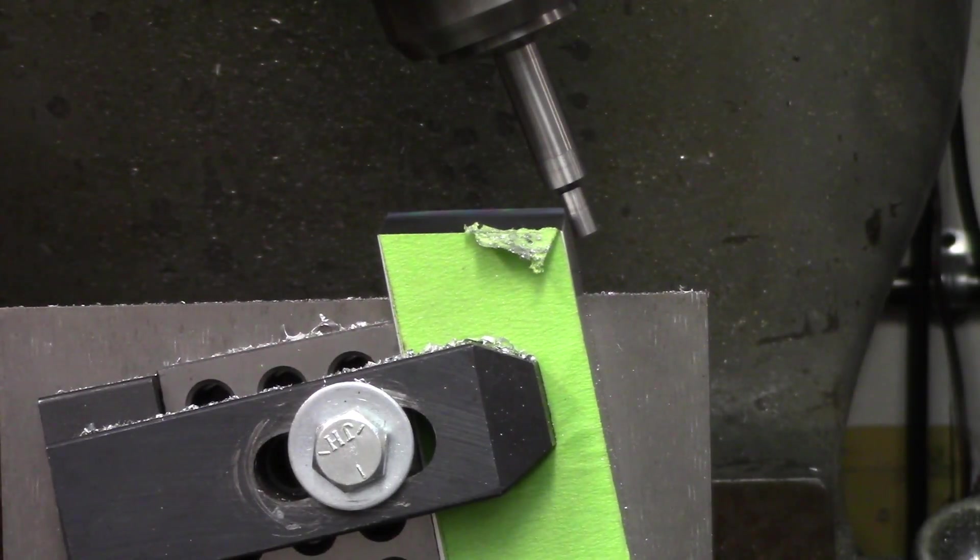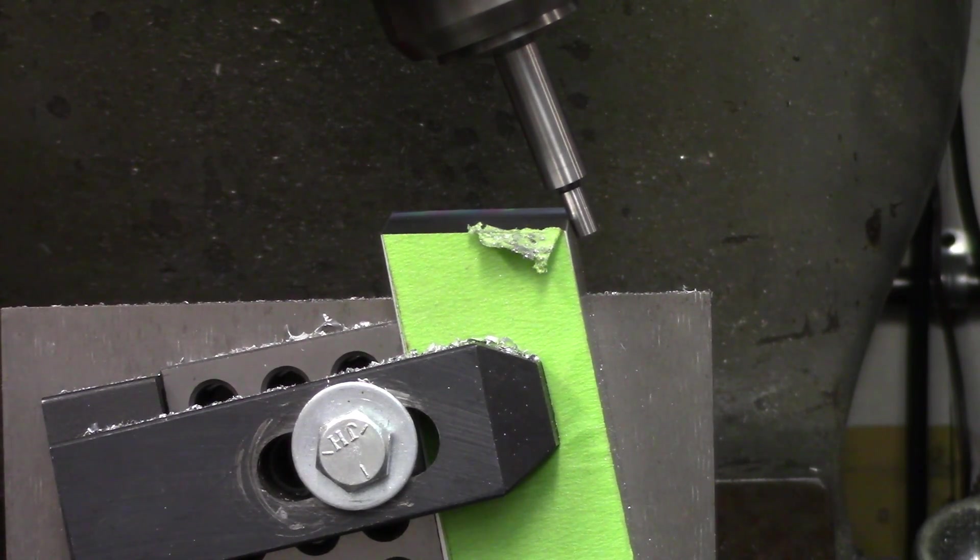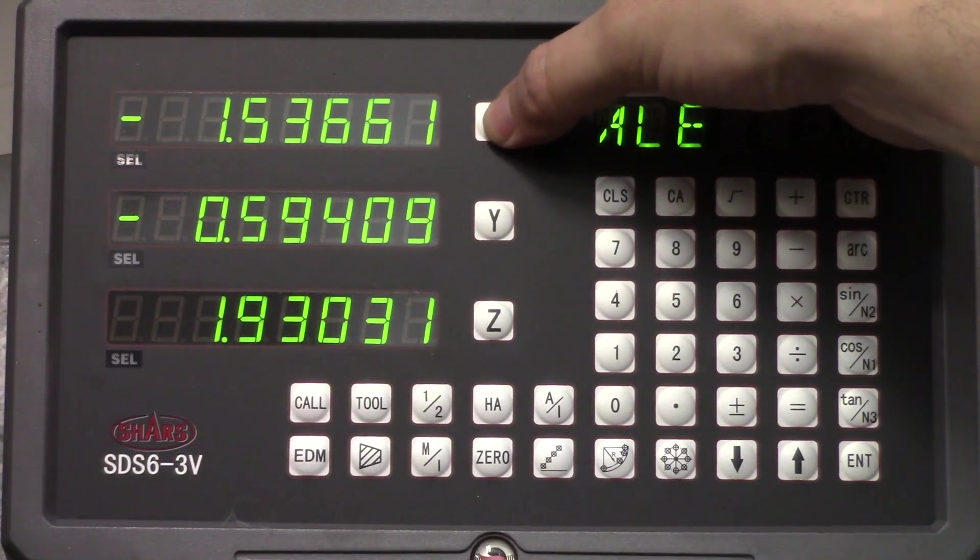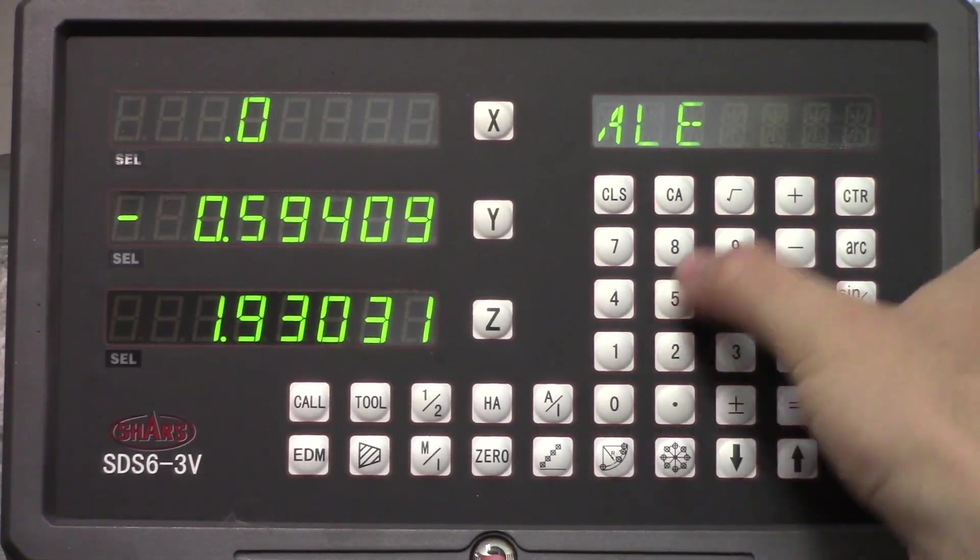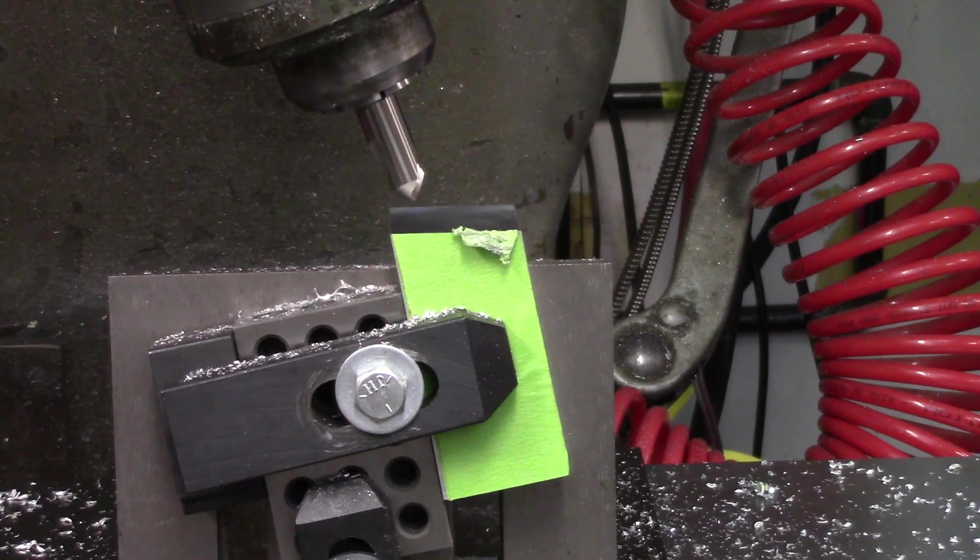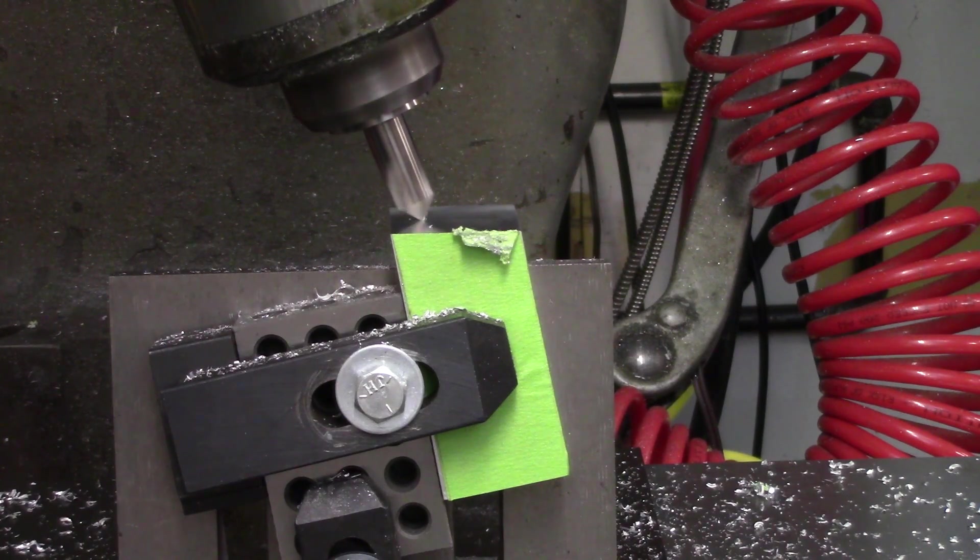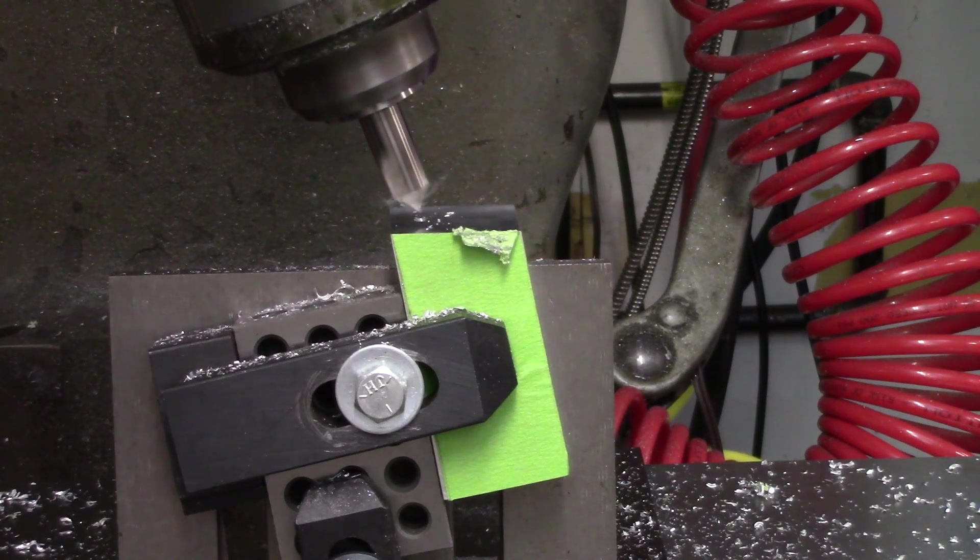Now that that's out of the way, I'll get on with finding the edge. I'm using the far side of the part so the edge finder only contacts the very corner of the part. I also need to make sure that once I find this edge, I do not move the table up or down. If I do, I'll have no idea where the centerline of the spindle is in relation to that edge.